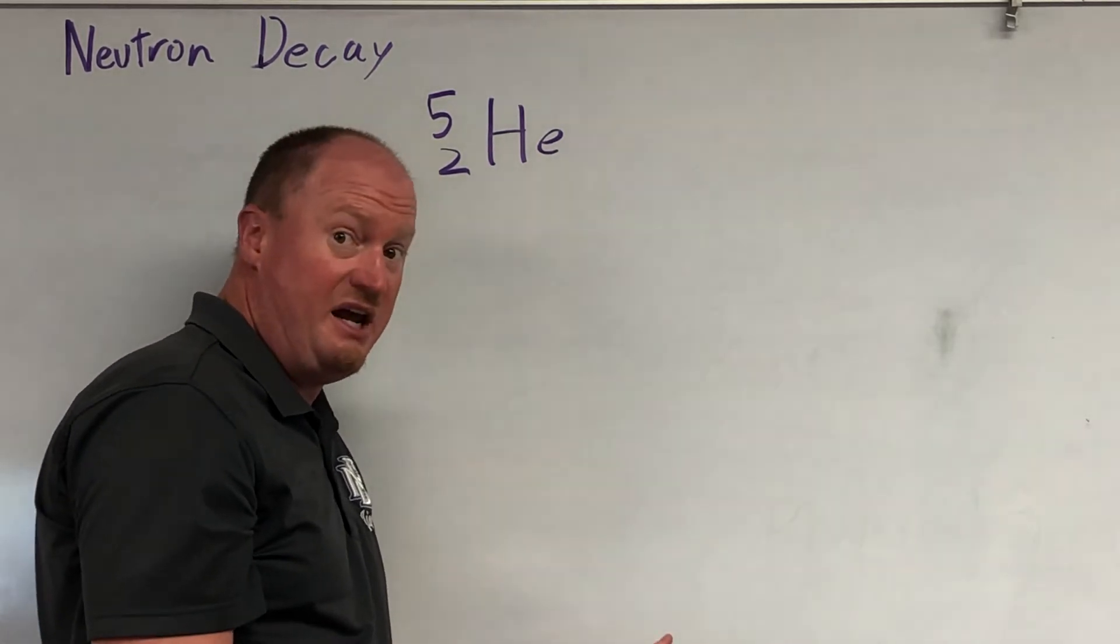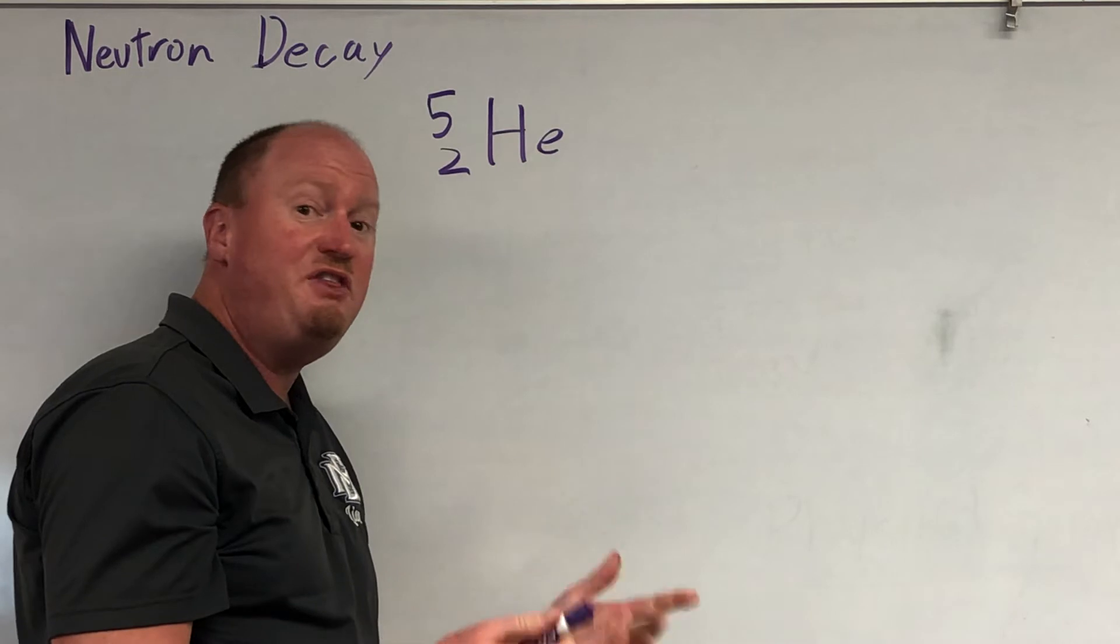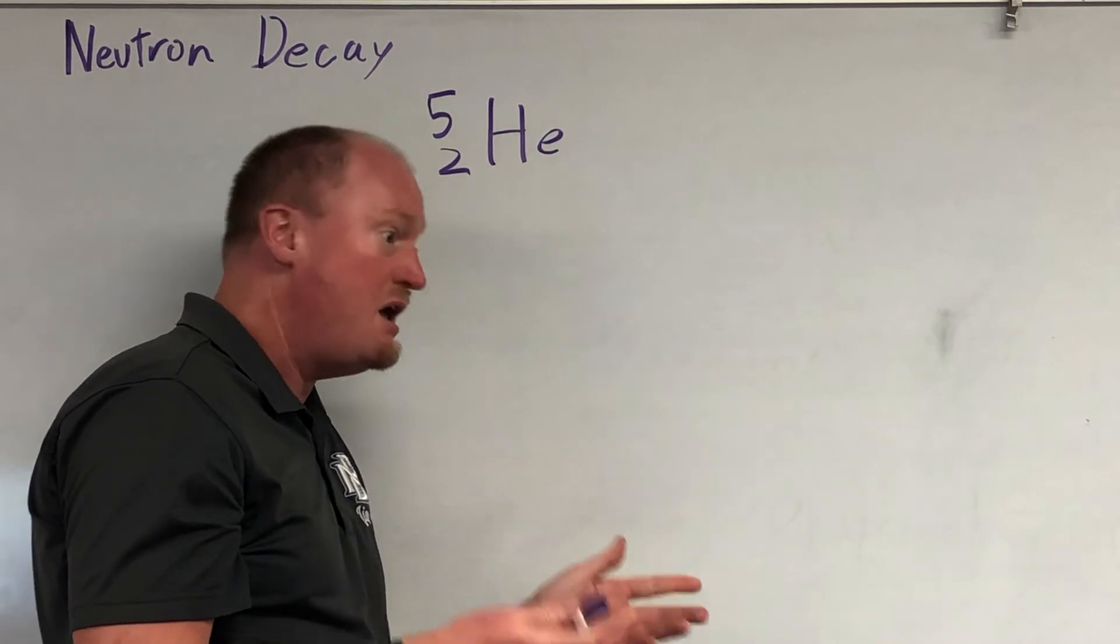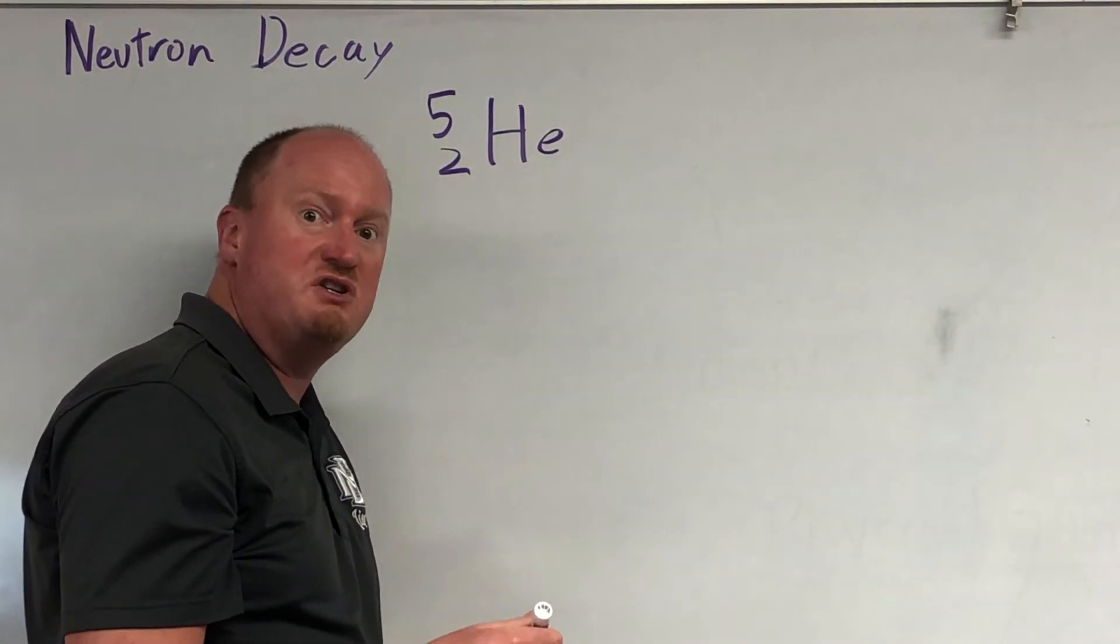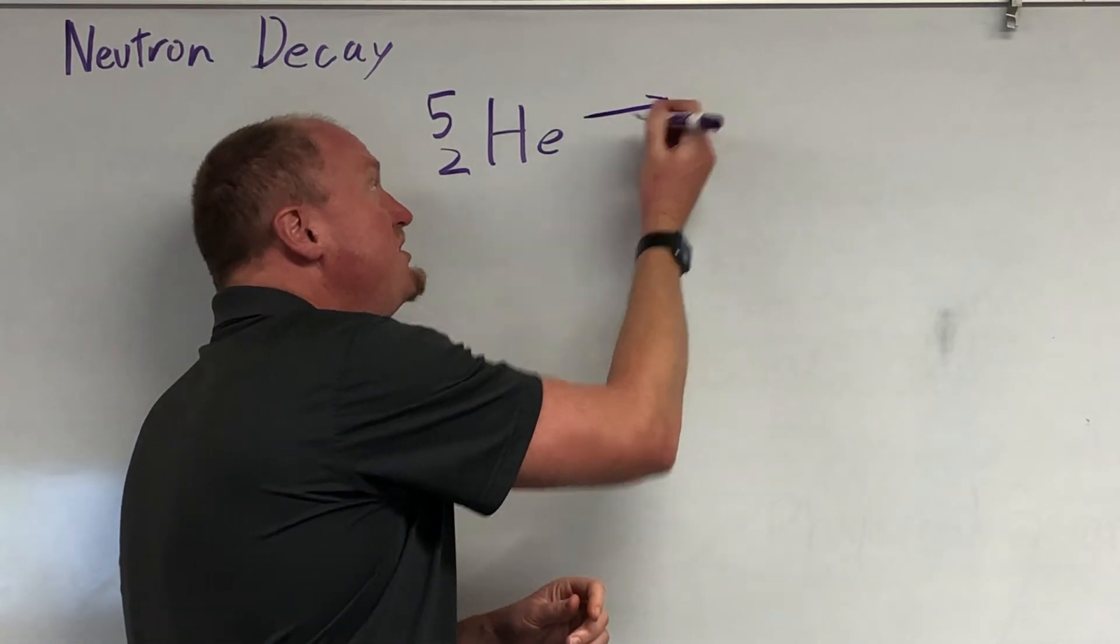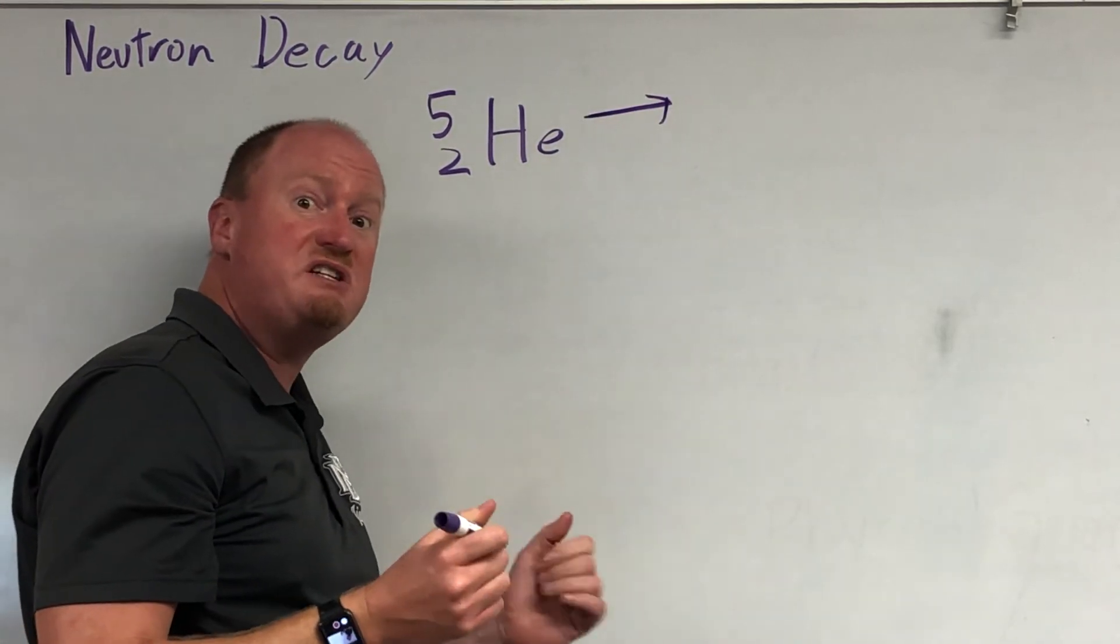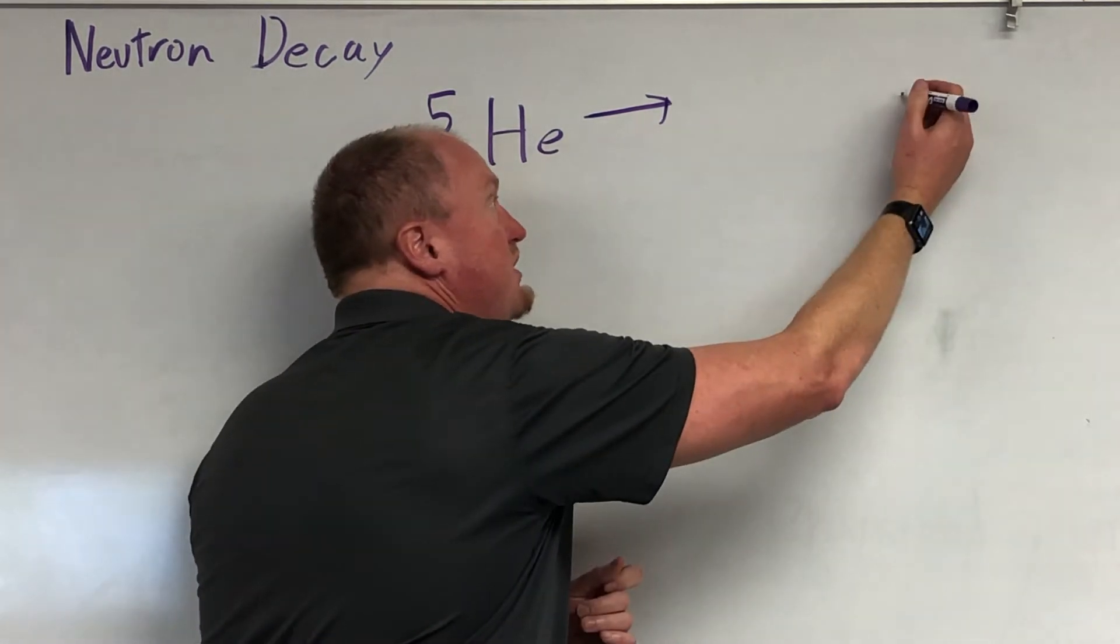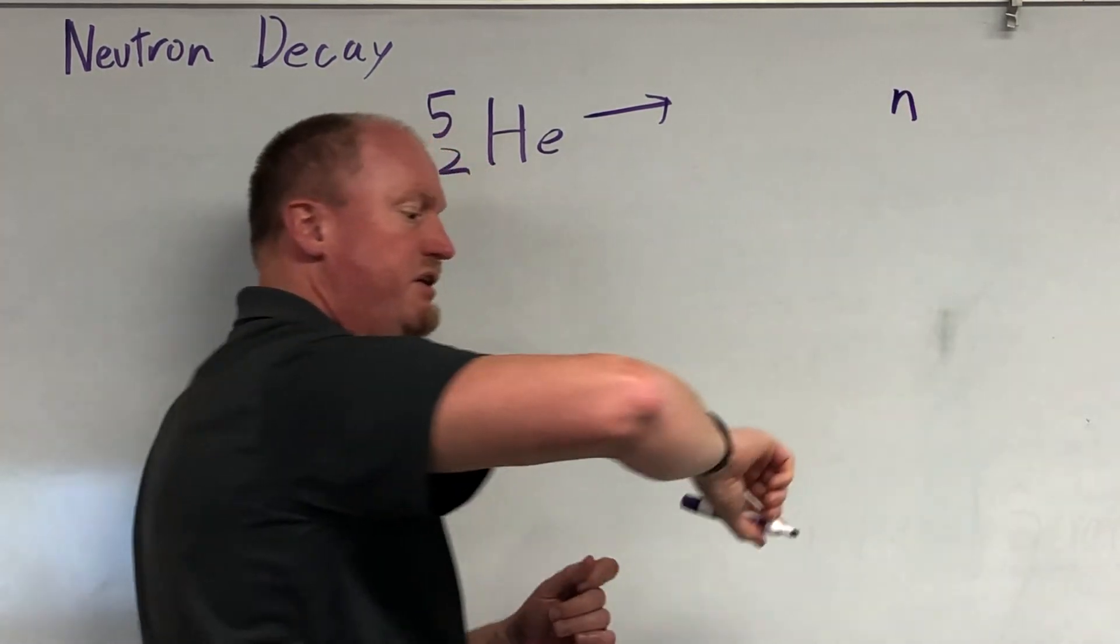It could go through beta decay, which would give you lithium-5. One of the neutrons becomes a proton, but lithium-5 is also extremely unstable. But it can go through a form of decay where it simply kicks out a neutron. So the neutron comes out. There it is.